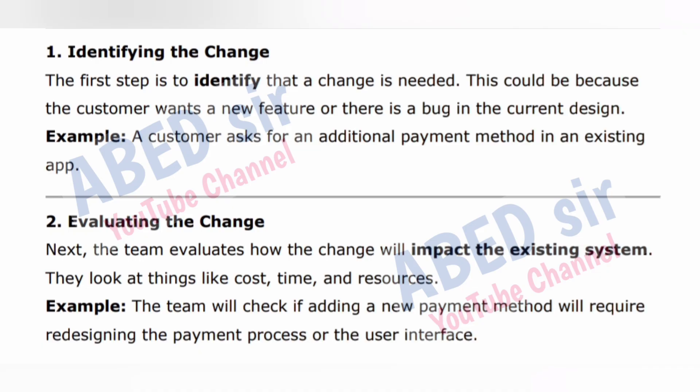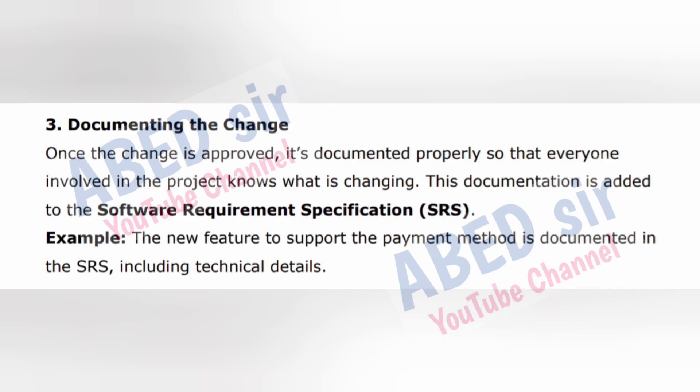Step 2 — Evaluating the Change: the team evaluates how the change will impact the existing system. They look at things like cost, time, and resources. Example: the team will check if adding a new payment method will require redesigning the payment process or the user interface. Step 3 — Documenting the Change: once the change is approved, it's documented properly so that everyone involved in the project knows what is changing. This documentation is added to the Software Requirement Specification (SRS). Example: the new feature to support the payment method is documented in the SRS including technical details.